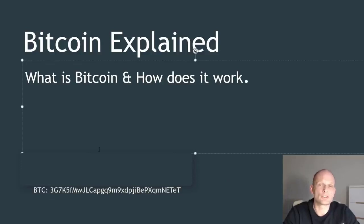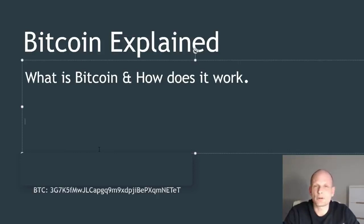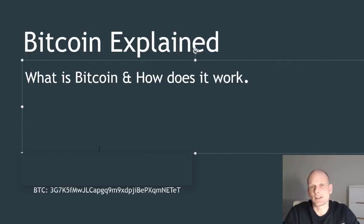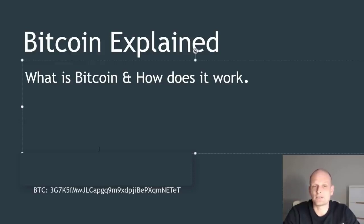Within these videos we will also talk about all other cryptocurrencies — why there are so many, why they have been created, and how they differ from Bitcoin. Bitcoin is known as blockchain one, and then there is blockchain two, like Ethereum, which uses smart contracts. We will dive into Ethereum and smart contracts and how they are different.